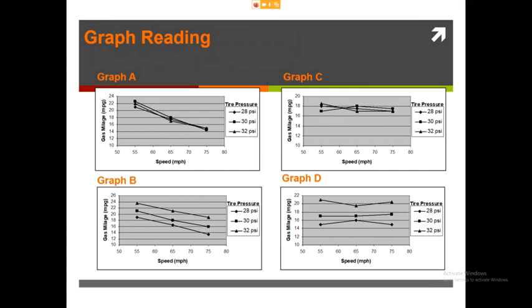Let's take a minute to practice graph interpretation. Ignore the fact that gas mileage is spelled wrong. Grab a little piece of scrap paper, and I'm going to give you four different scenarios. I want you to choose from four graphs — write down one through four and, when I describe the scenarios, write A, B, C, or D on your paper. Don't say it out loud. The first one: which graph shows a correlation with speed but not with tire pressure?